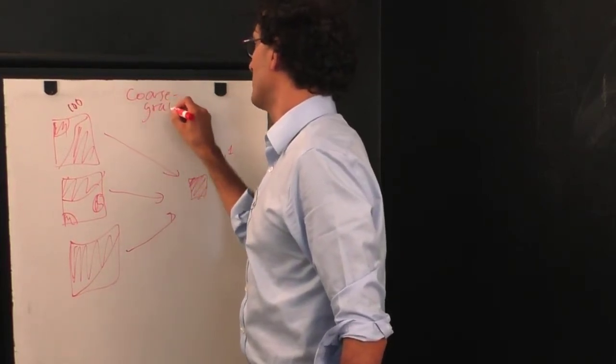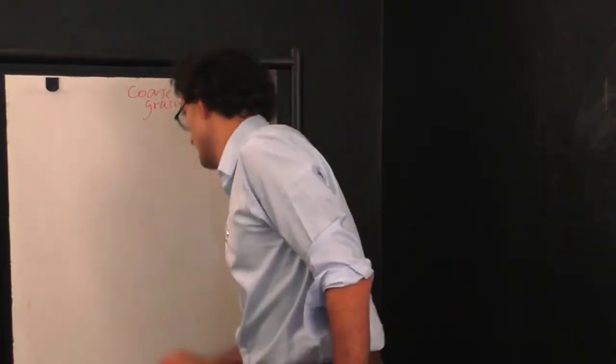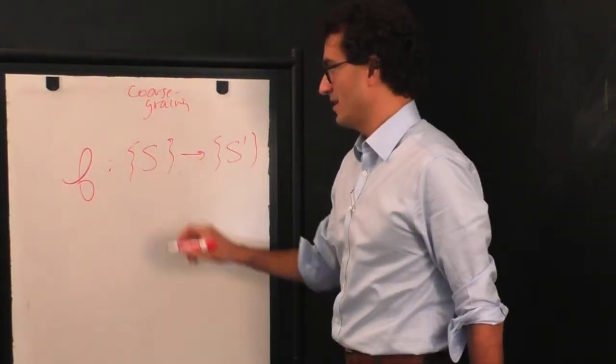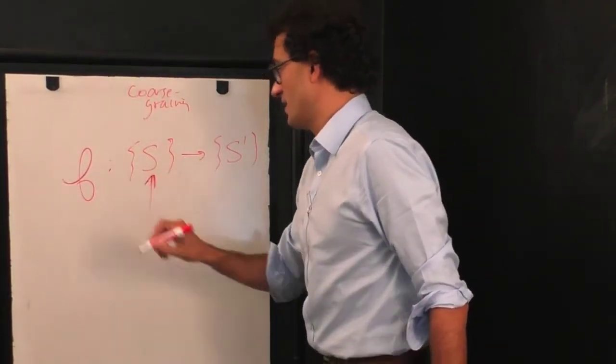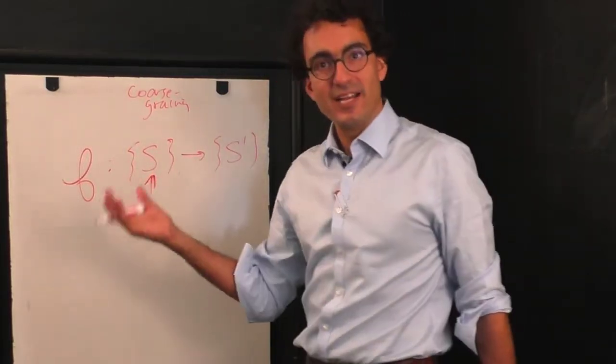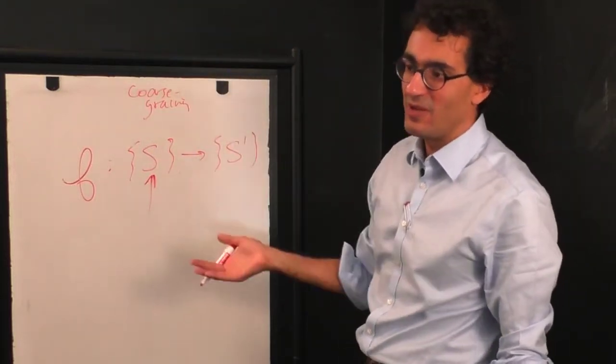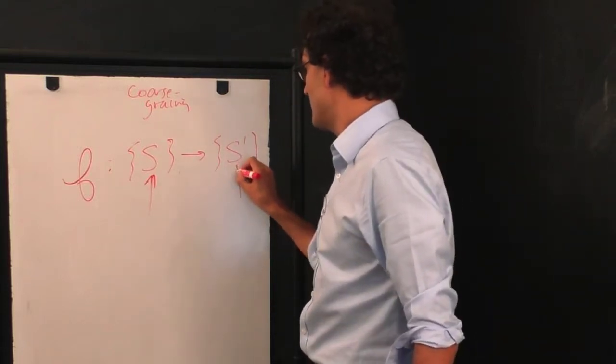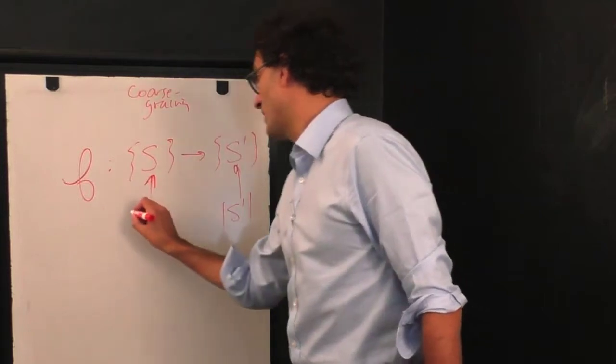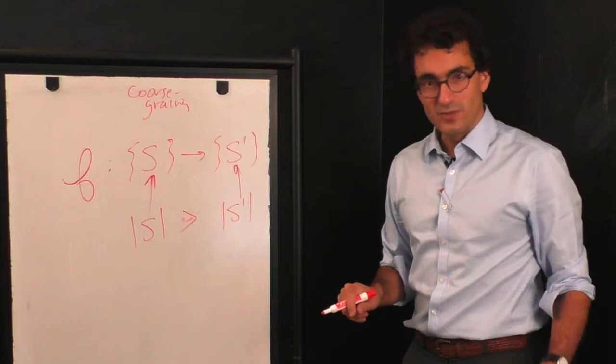This is a simple example of how we build a function f that maps from some space s to some space s prime. This is a list of properties or this is the set of properties that describe the fine-grained system. For example, it could be the entire productivity list, the entire employment history of every single person in the economy. And over here is a much, usually much smaller set of quantities that we're going to use to describe the coarse-grained system.